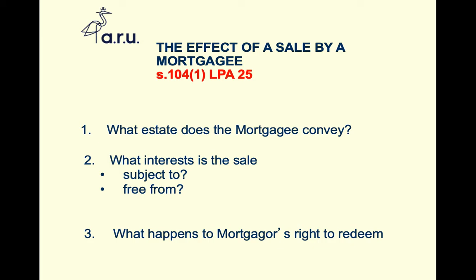The mortgagor's right to redeem — their right to have the property bounce back to them fully once all mortgage money is repaid — is extinguished by the sale. The contract of sale to a new buyer extinguishes that right. The former borrower cannot reclaim the property; all they may end up with is some of the proceeds of sale if there was any equity in the property.